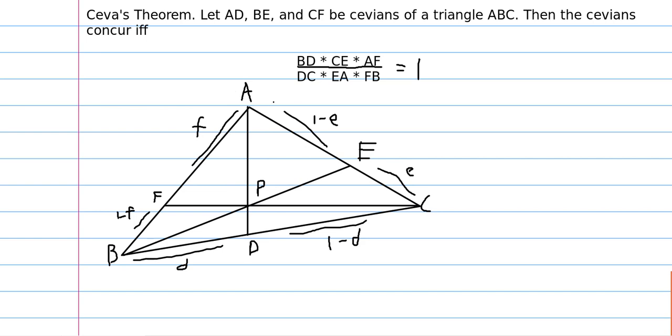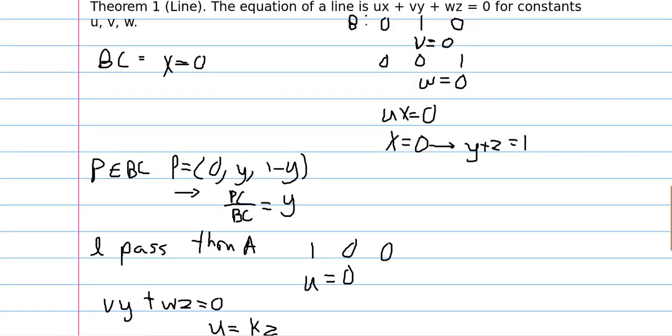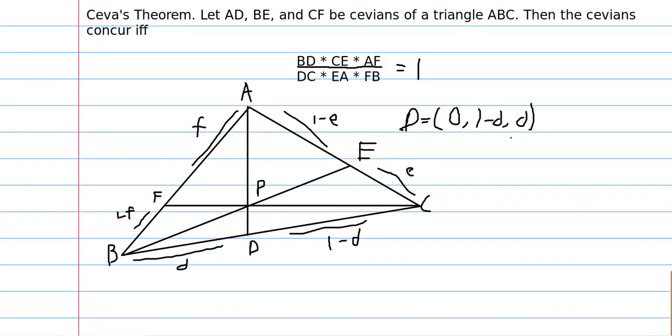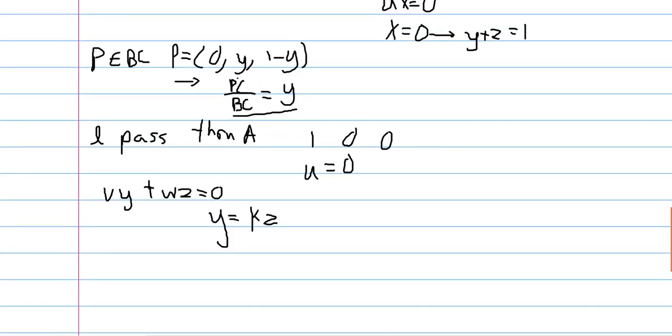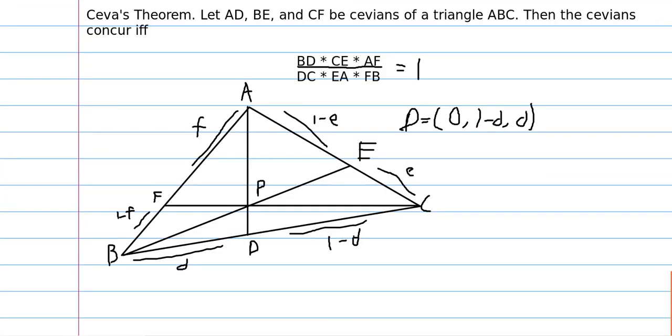So first, let's look at the coordinates of point D. It's on line BC. So we know that X is 0. Furthermore, we know that the ratio DC to BD is 1 minus D to D. So the Y coordinate is 1 minus D and the Z coordinate is D using our ratio definition here. We use this ratio definition. Yeah, because Y is PC over BC which is 1 minus D over 1.